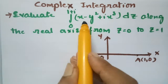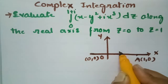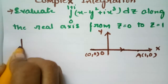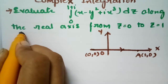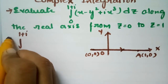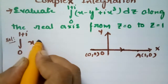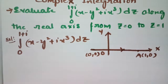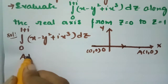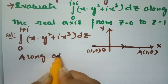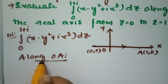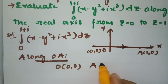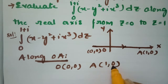We have to evaluate this integral along OA. The integral is from 0 to 1+i of (x - y² + i·x³) dz along OA. Point O is the origin (0, 0) and point A is (1, 0).